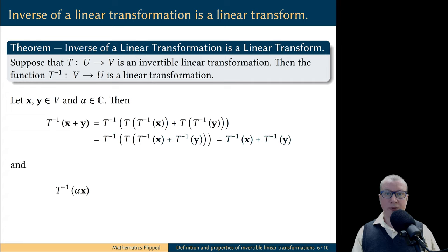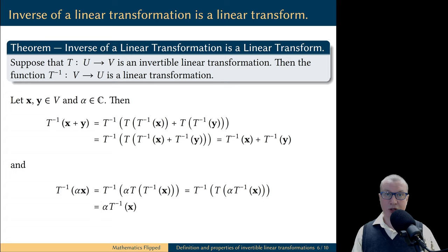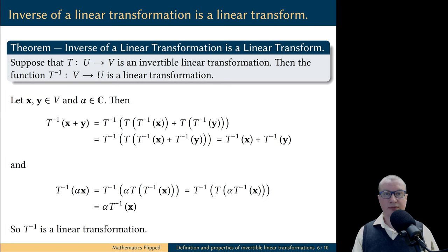Now let's compute the value of t inverse on the vector alpha x. Similar idea to the first part: we use the inverse property and replace vector x with t of t inverse of x. Then we recall that t is a linear transformation, therefore we can take the scalar alpha and move it inside t. But then t inverse and t on the outside cancel each other out. This computation shows that t inverse respects scalar multiplication. Therefore, we have proved that the inverse of t is a linear transformation.